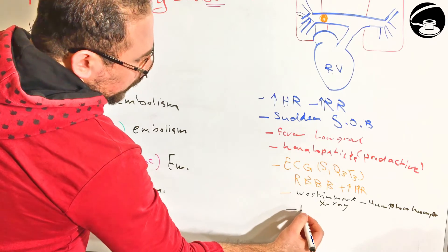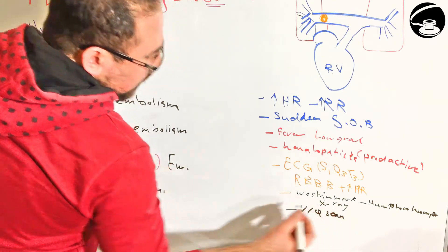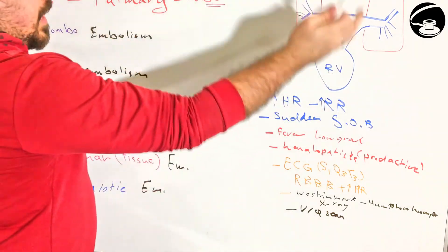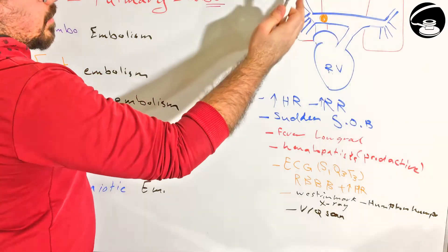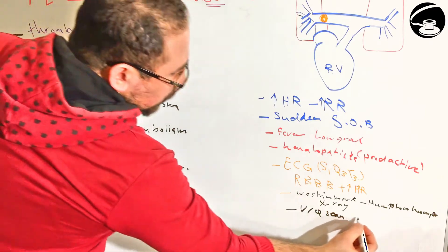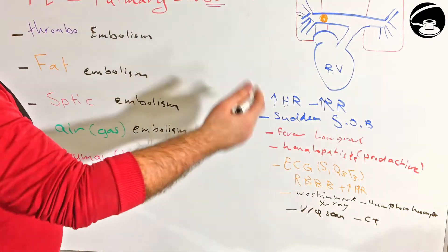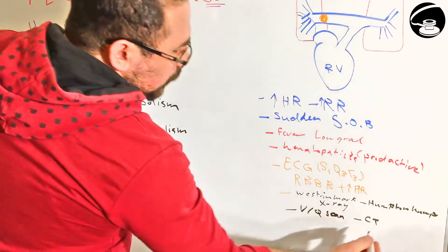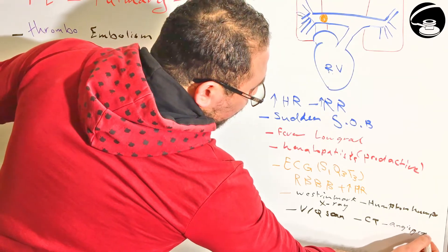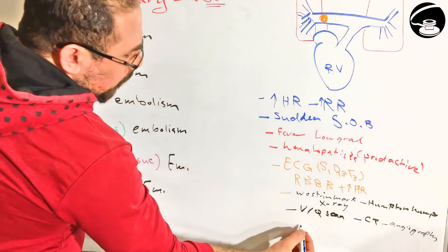The best way to diagnose is we use what we call the VQ scan, which basically we give a radioactive material both in the artery and inhaled in the lung. That will give us an image, and if there is a block in the artery, we can see it very clearly on the VQ scan. We can use also the CT scan with contrast, with some dye, and we can use angiography both for seeing the vessels and for treatment.